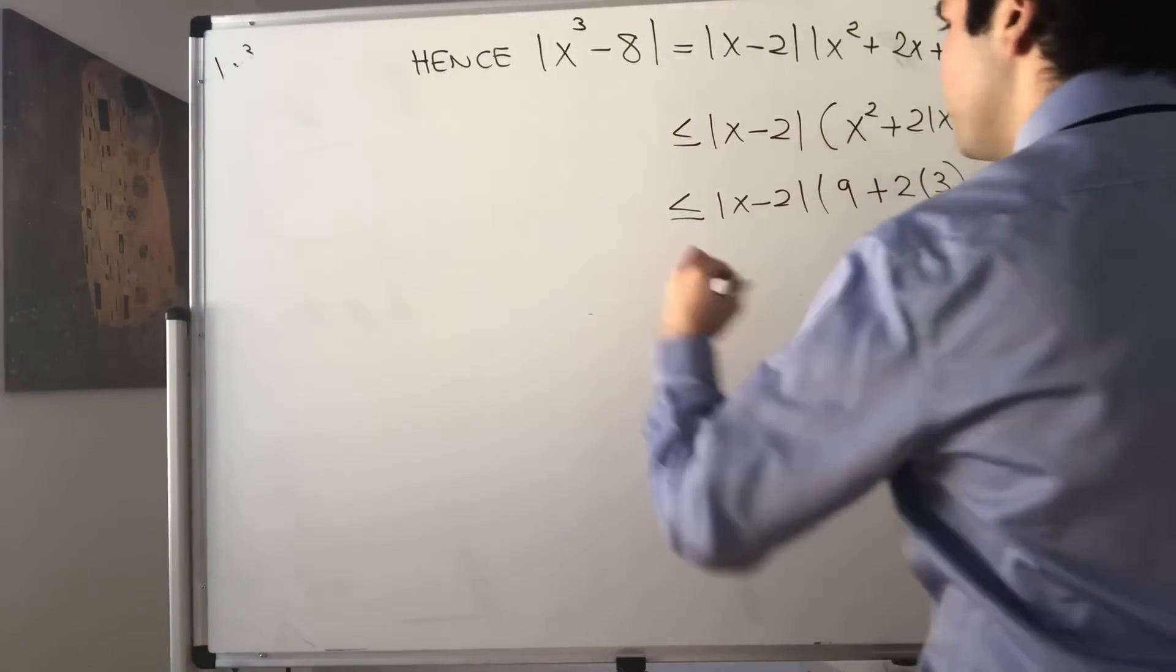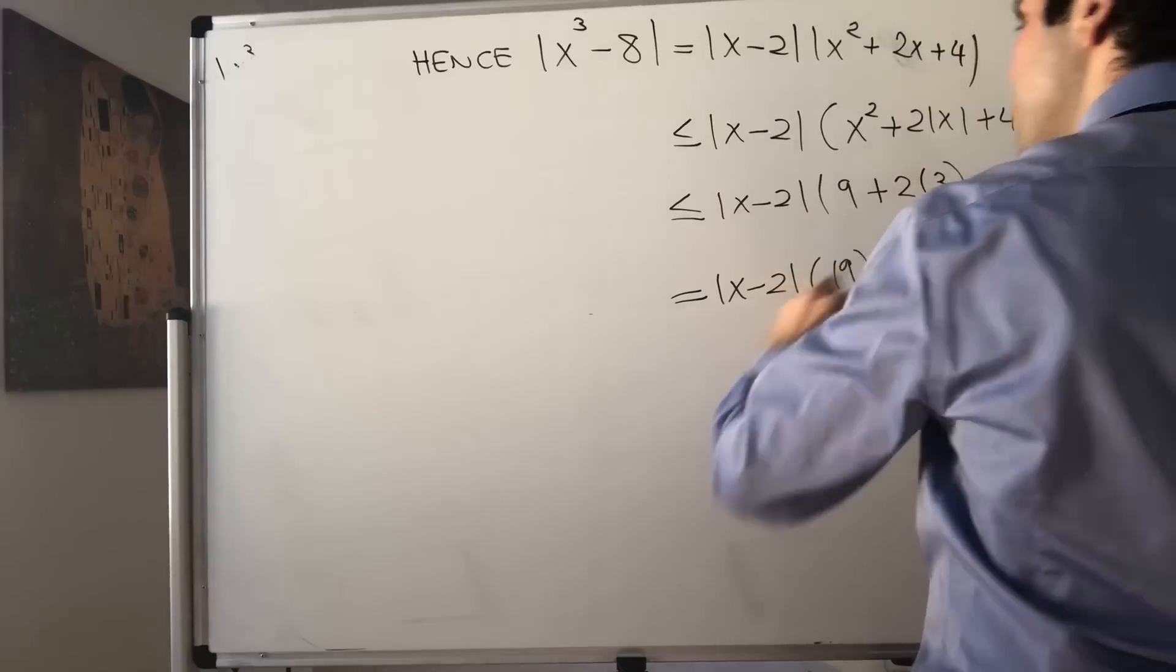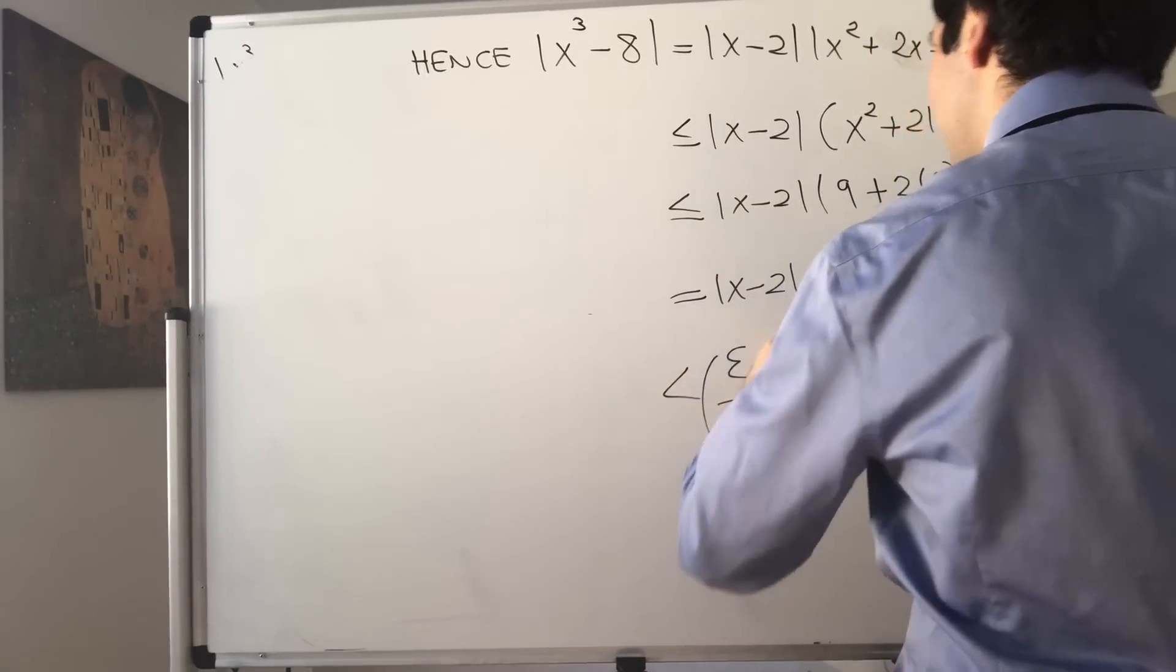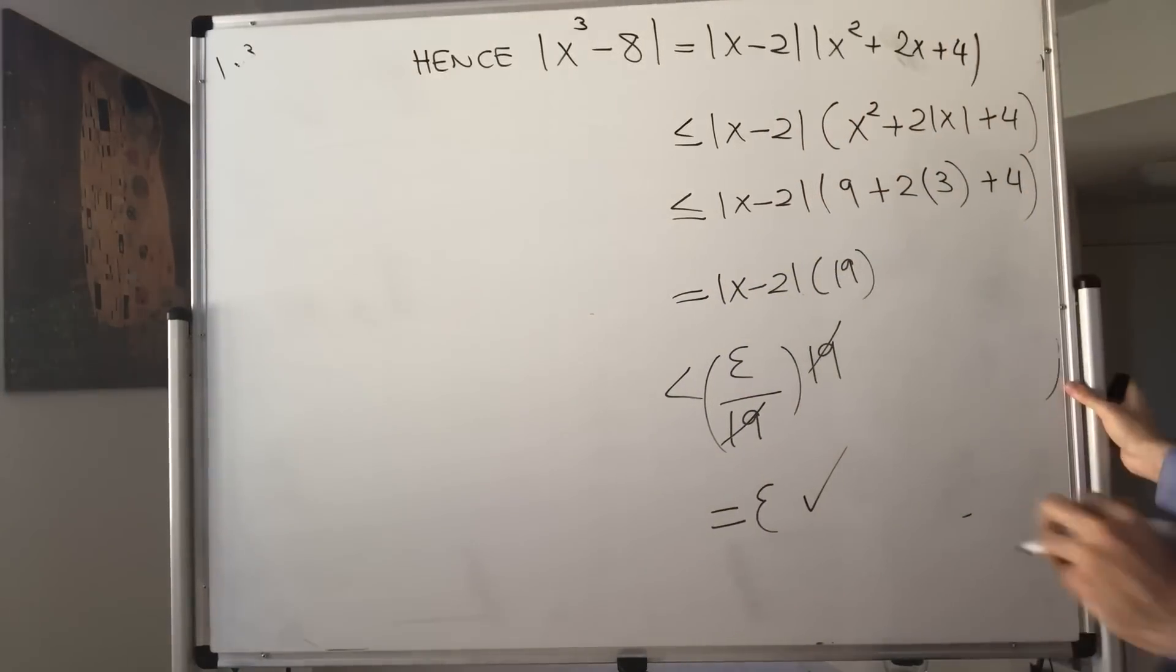This becomes x minus 2 times 19. But remember x minus 2 was less than epsilon over 19, and then times 19, and you're left with the victorious epsilon.